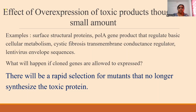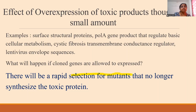Some of the toxic products are like surface structural proteins, cystic fibrosis transmembrane conductance regulator, or lentivirus envelope sequences — these are toxic products to the E. coli cells. Because the product is toxic, the cell is going to select for mutants — mutants which are no longer going to synthesize the toxic proteins.